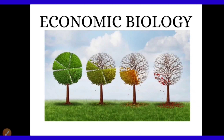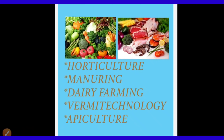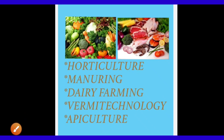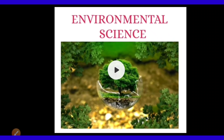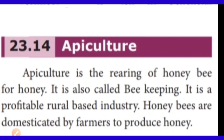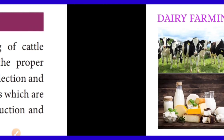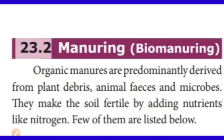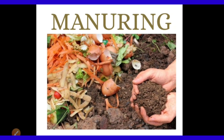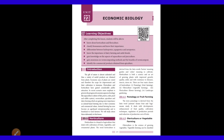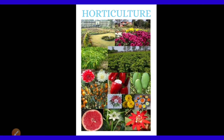In Economic Biology, we are going to discuss 5 topics, and medicinal plants we can see separately. The 5 topics are: Horticulture, Manuring, Dairy Farming, Vermitechnology, and Apiculture. In the recent scenario, more emphasis is given to the progress of economic aspects of Zoology like Aquaculture, Vermiculture, Apiculture, and Dairy Farming, which are gaining more importance as animal-based farming due to their economic and commercial values.